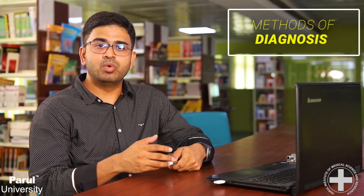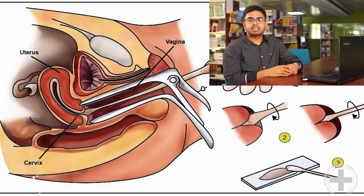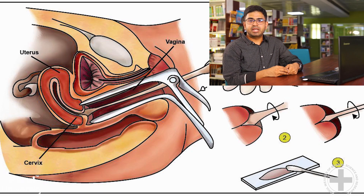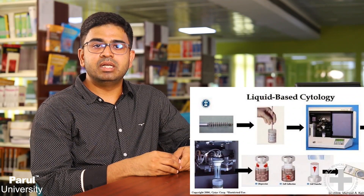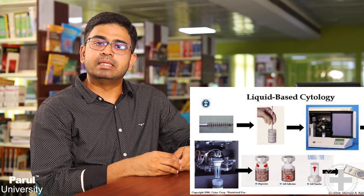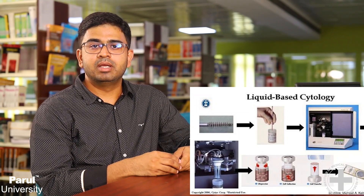How do we take the pap smear? A spatula is used and scraped around the cervix. After this, the cells are smeared onto a slide. Then this slide is fixed and stained with the pap stain. A newer method is available which we call liquid-based cytology. In liquid-based cytology, the collection method is almost similar, but in place of a spatula we use a brush, and the material is taken into a preservative in a container. This is then used by a machine to prepare new slides.